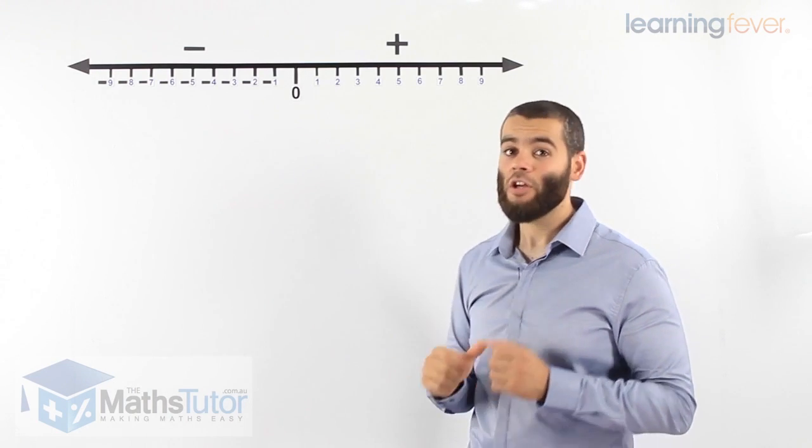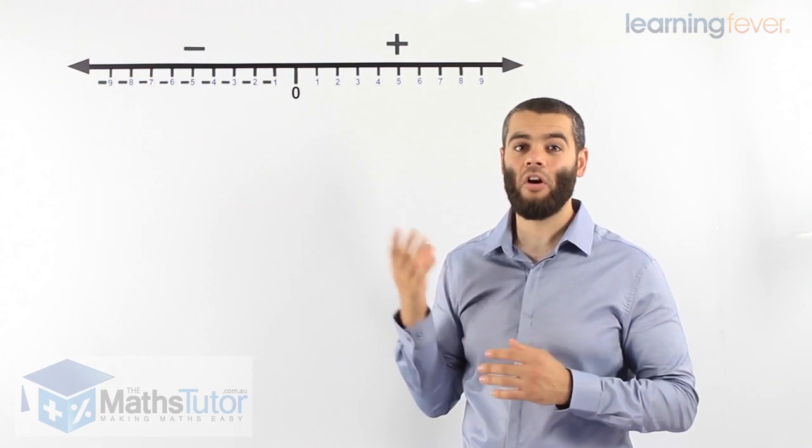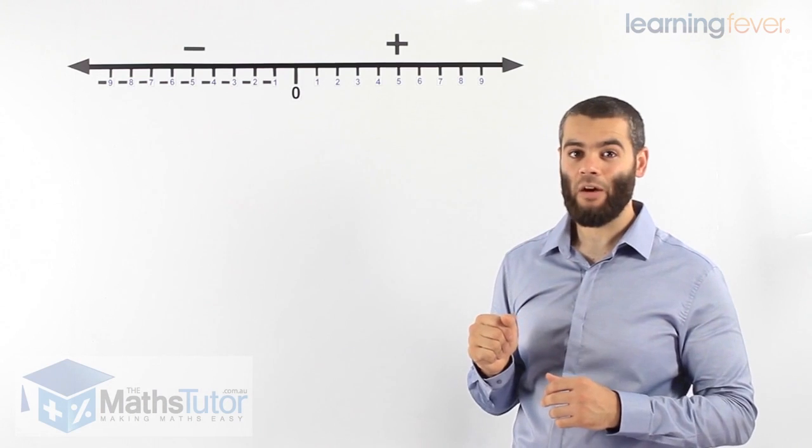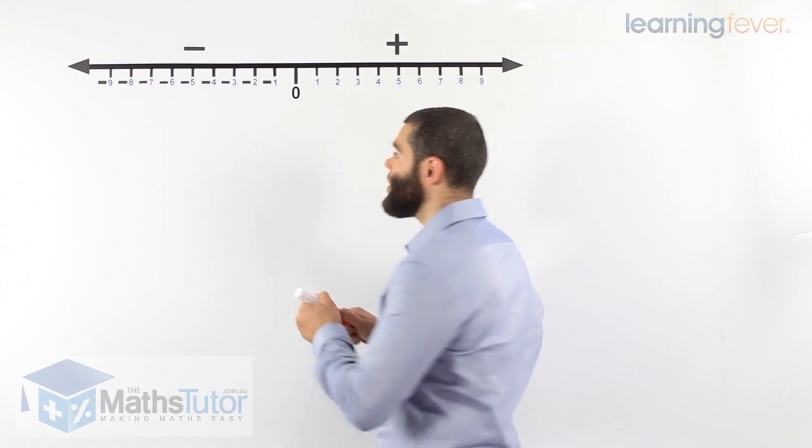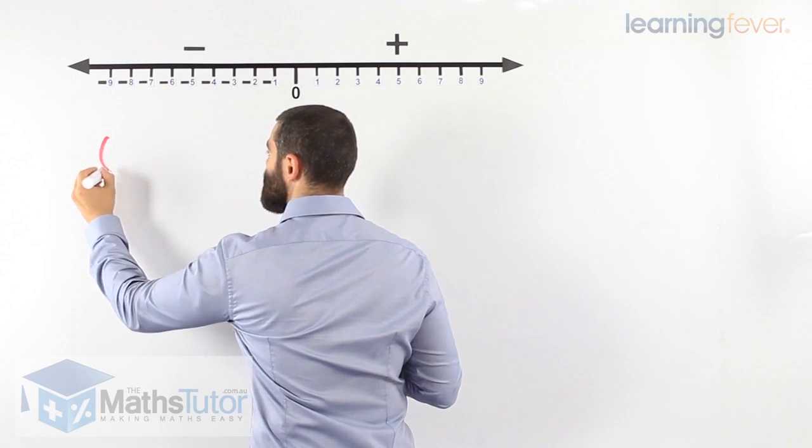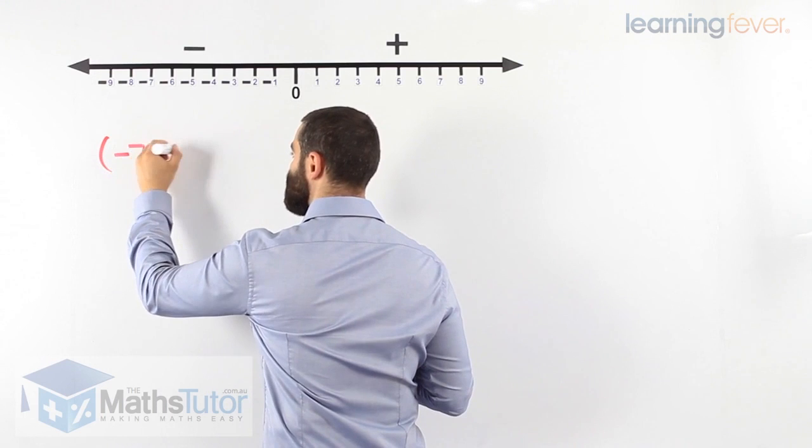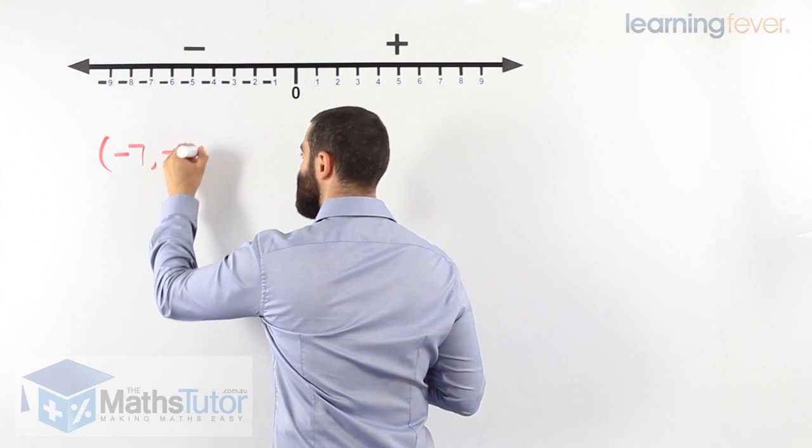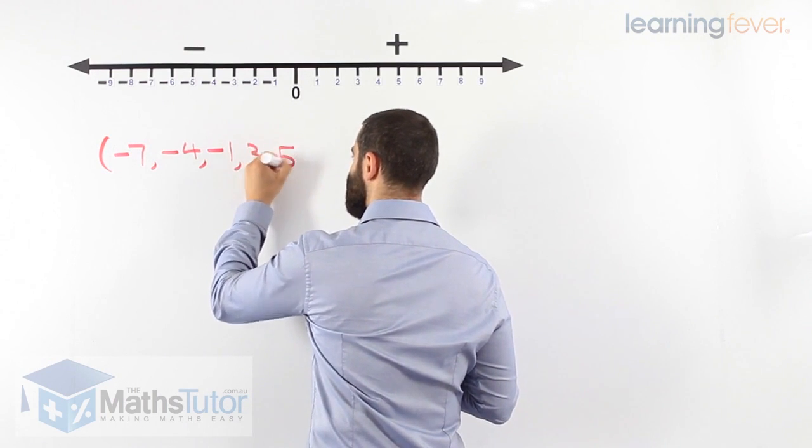At times, you're going to be asked to graph or plot the points on a number line. Let's see how we do that. So as an example, we're going to be asked to plot negative seven, and negative four, and negative one, and three, and five.